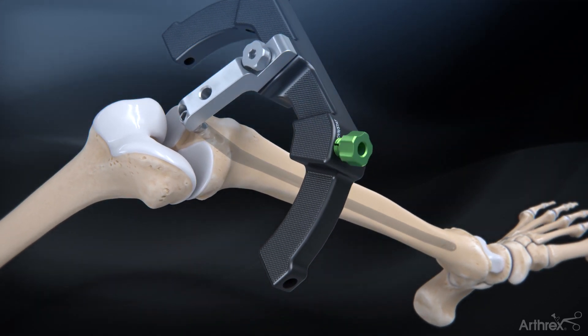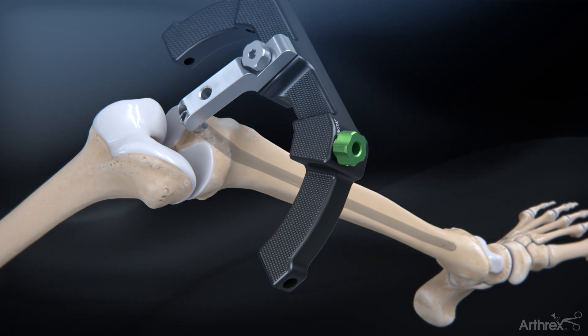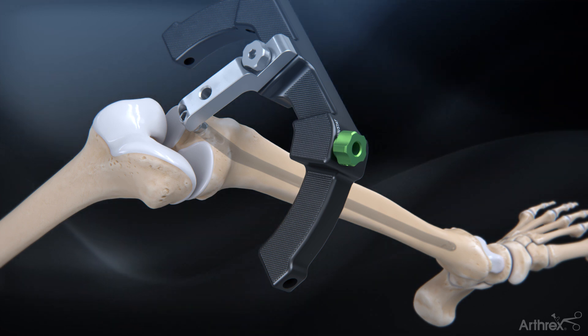Thread the green locking collar into the locking hole on the targeting module. When compression is desired, be sure to use the hole marked dynamic.